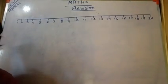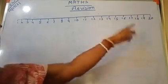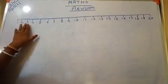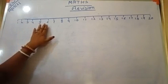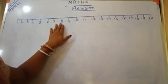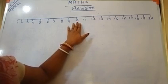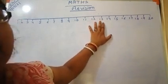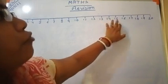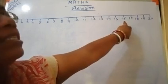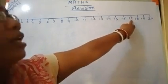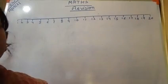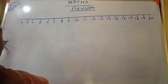Okay, so this is a number. When we are reading the numbers from 1, 2, 3, 4, 5, 6, 7, 8, 9, 10, 11, 12, 13, 14, 15, 16, 17, 18, 19, 20 — it is forward counting.